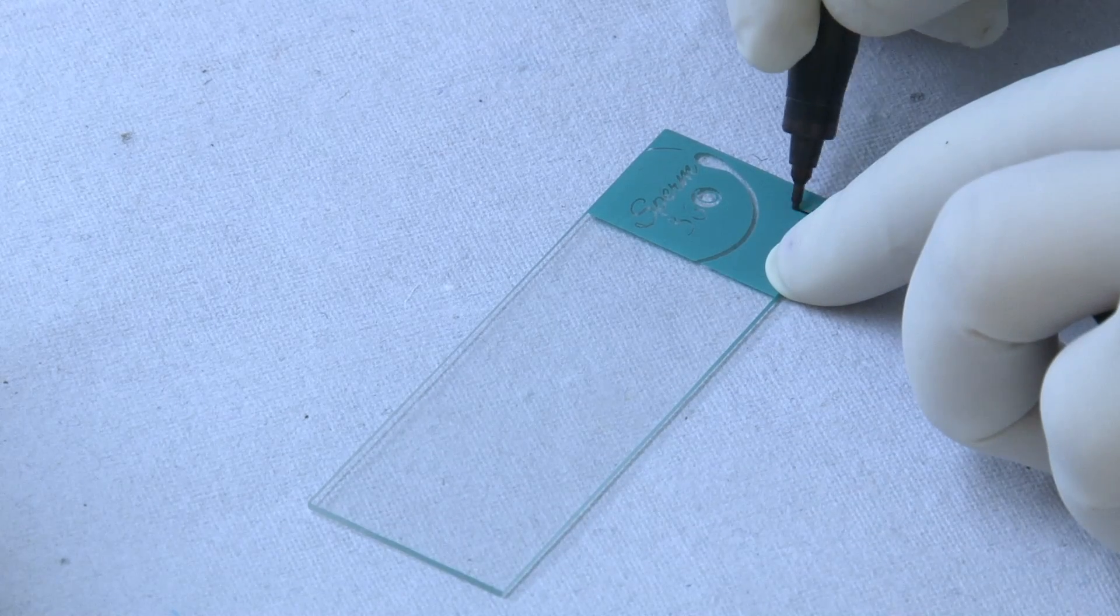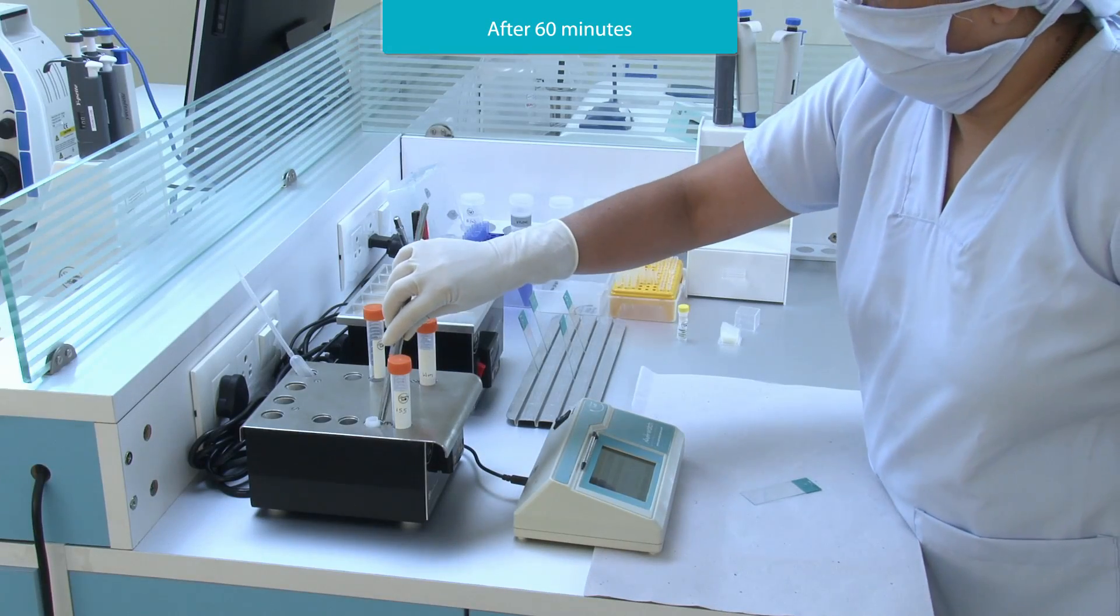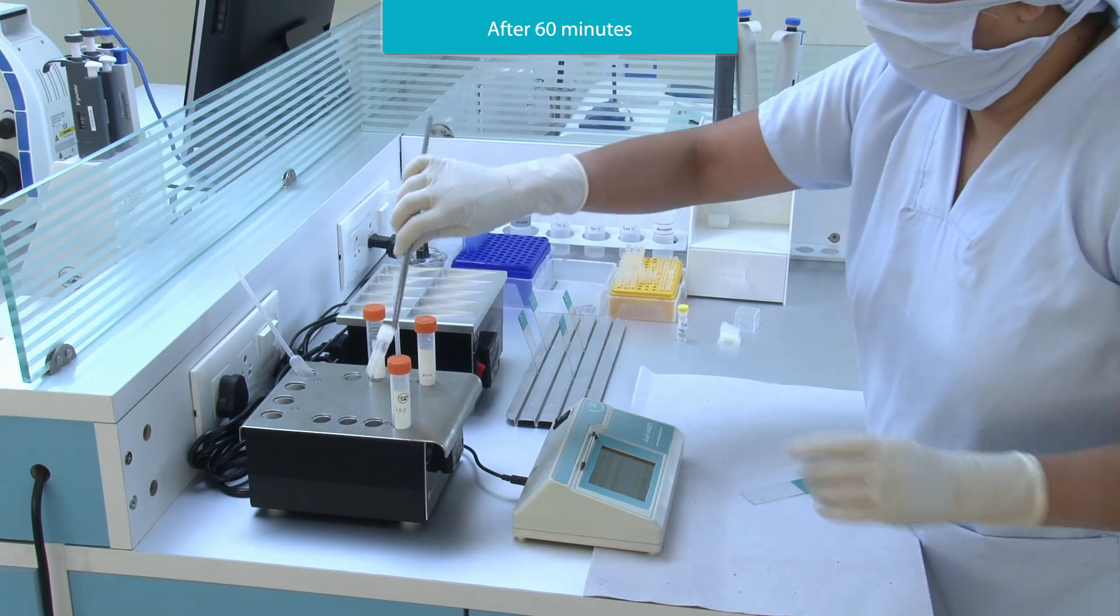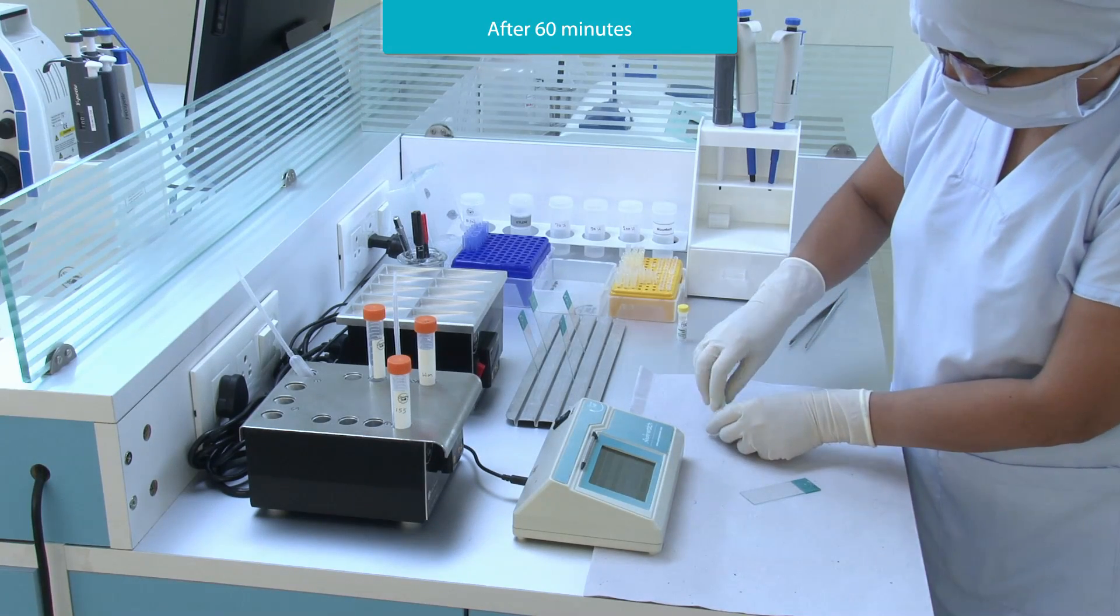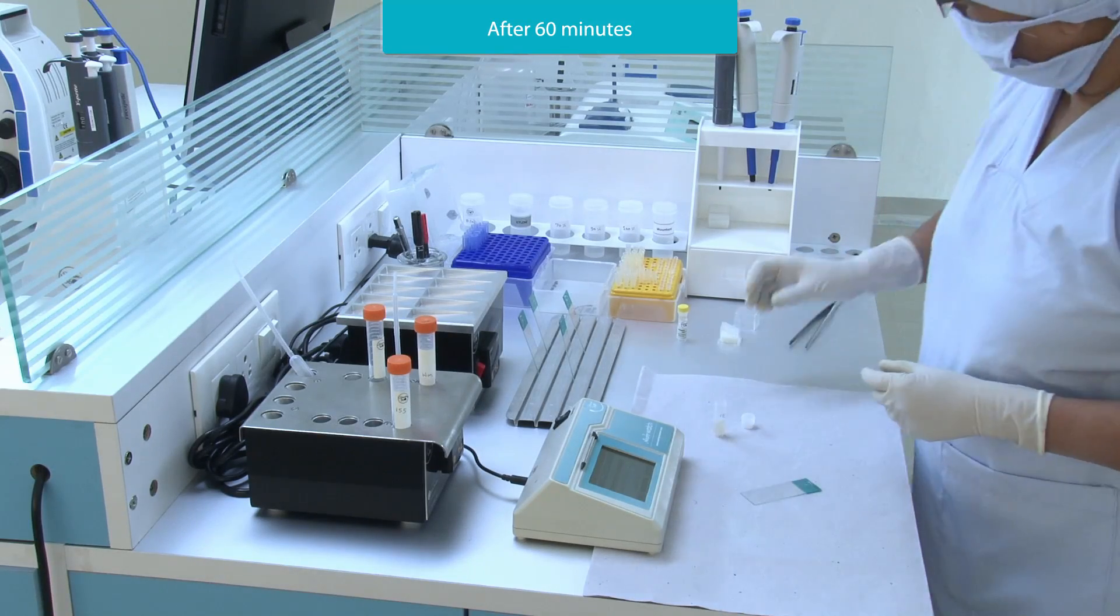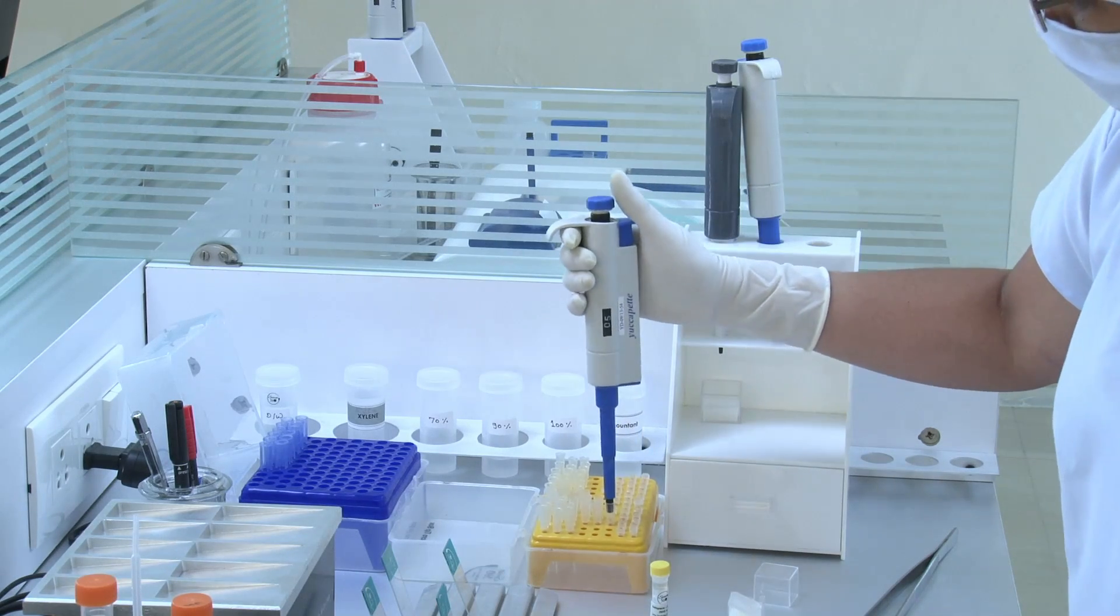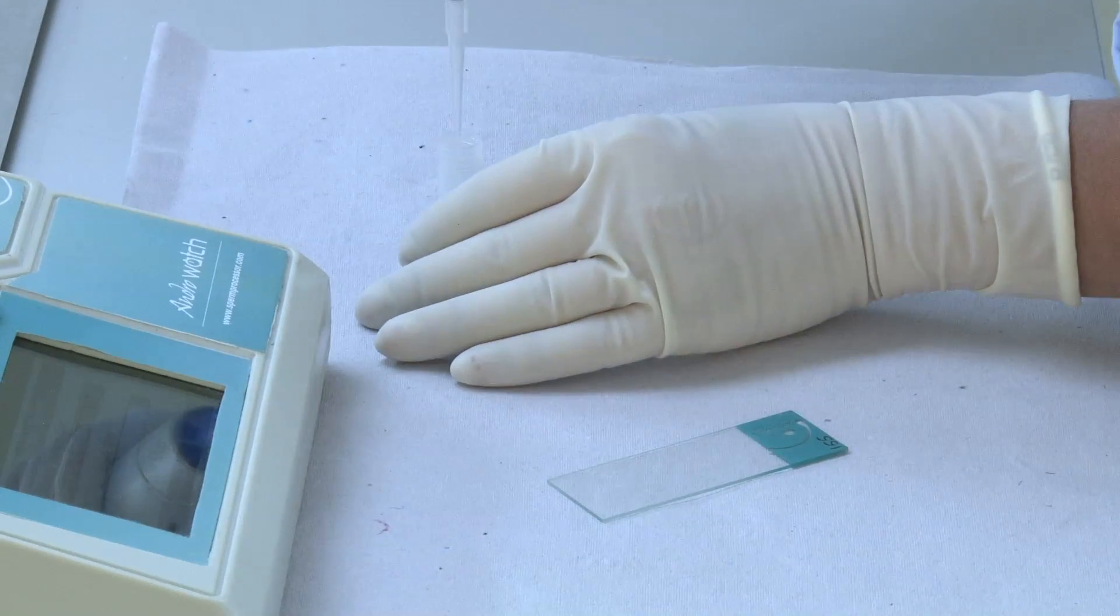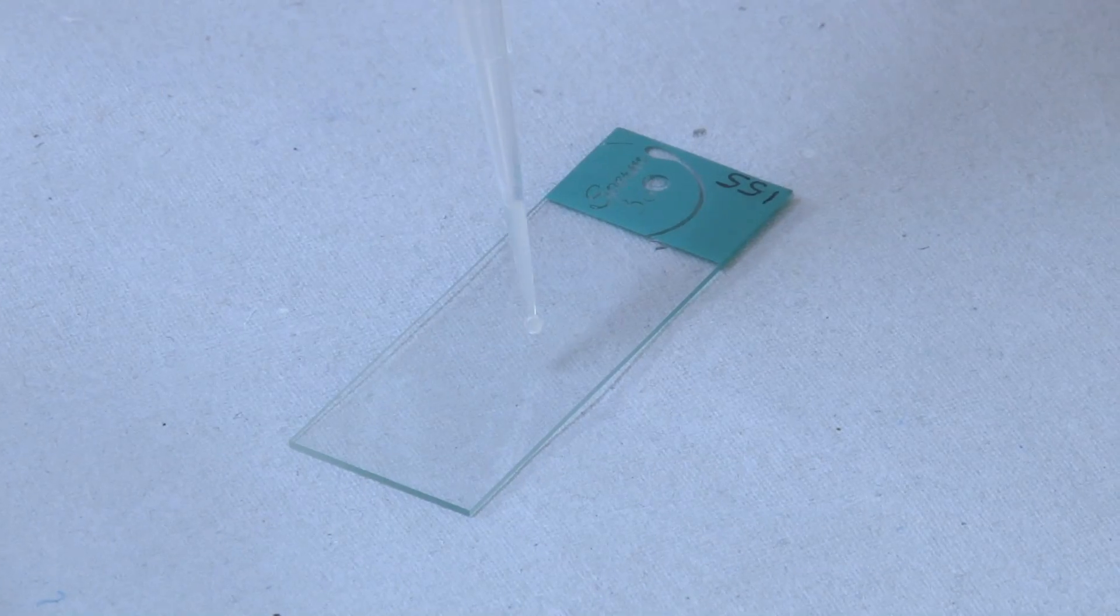Take a slide and label it with ID. Place 5 microliters of incubated semen on the slide.